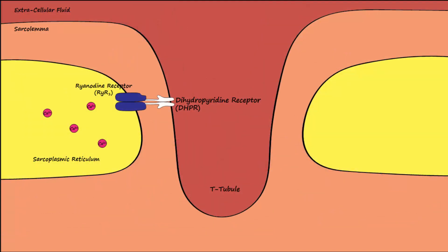The muscle relaxer dantrolene is a ryanodyne receptor antagonist and binds to the ryanodyne channel to prevent it from opening when the action potential reaches the DHPR. This prevents release of calcium from the sarcoplasmic reticulum and prevents muscle contraction.